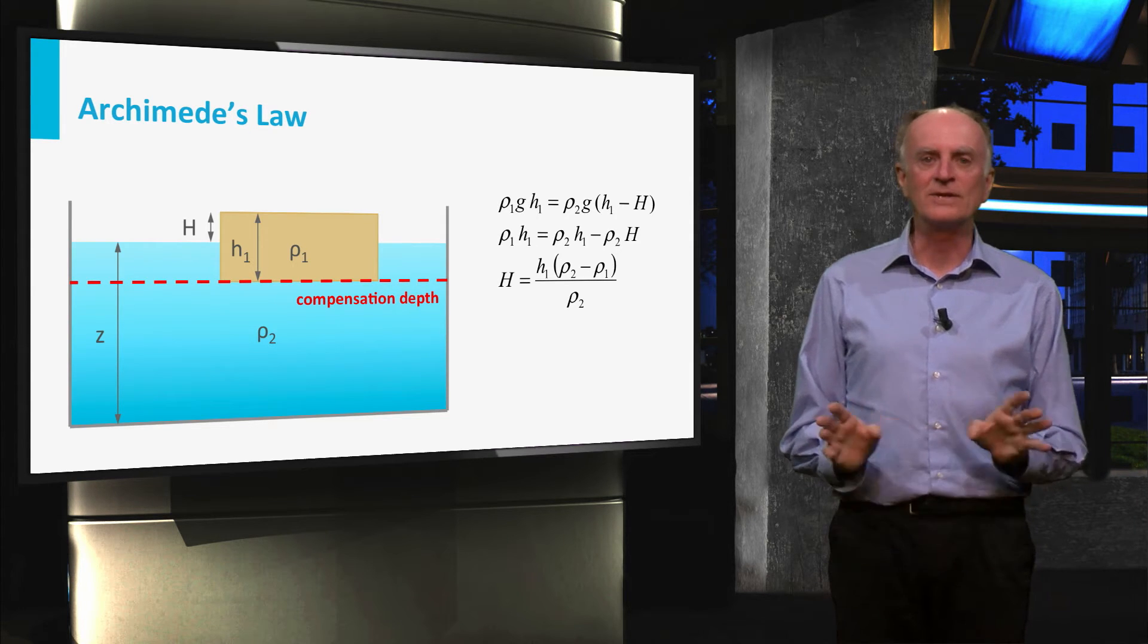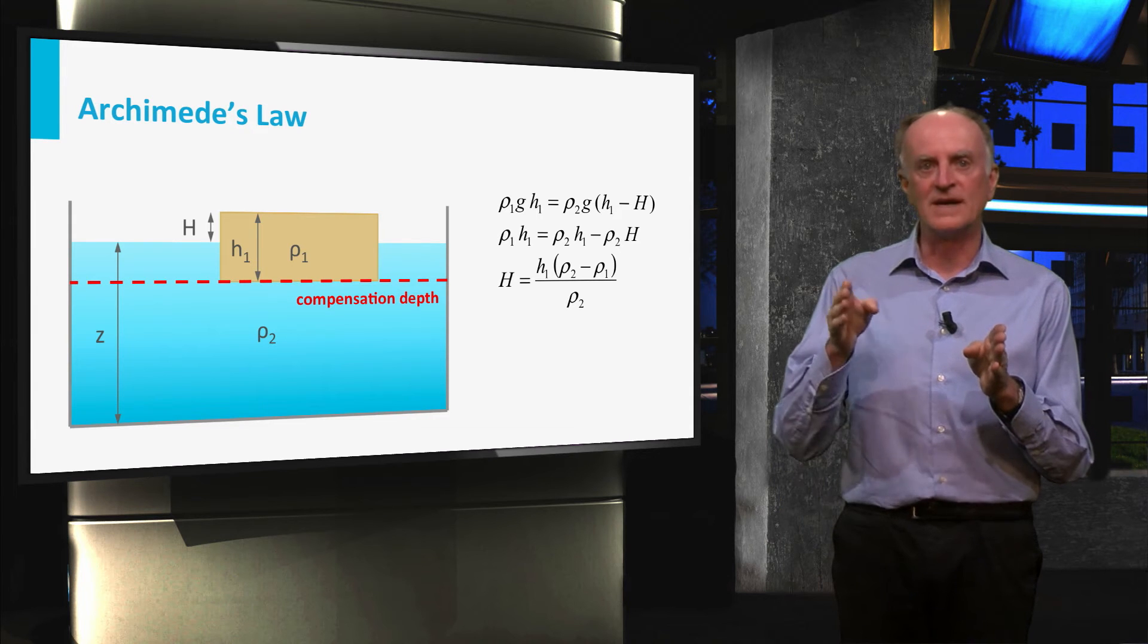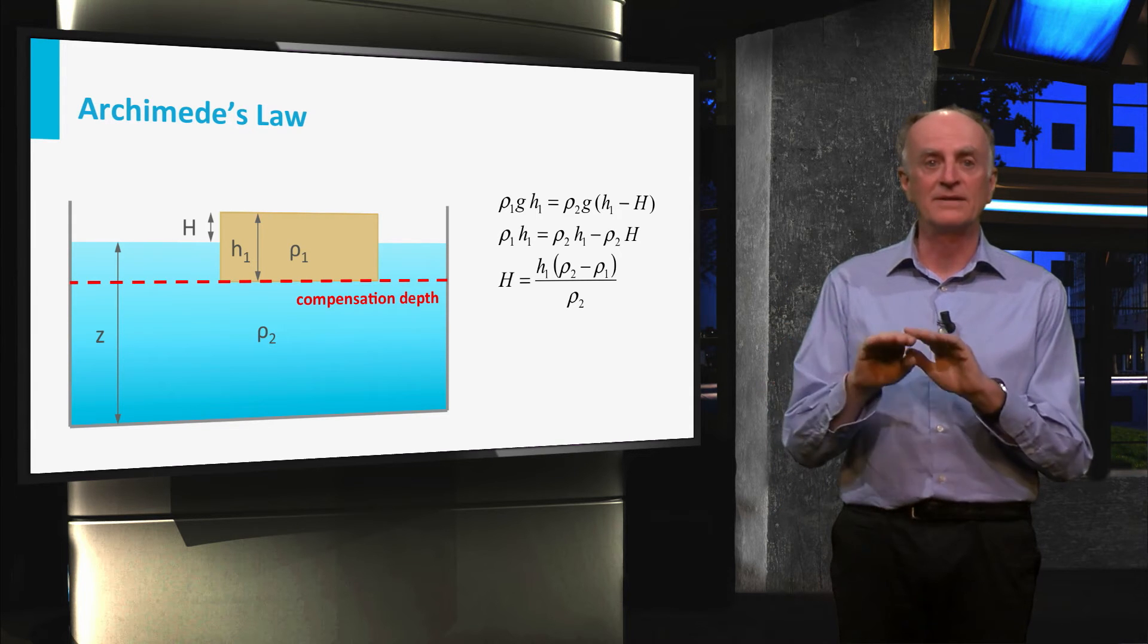An alternative formulation of the law of isostasy is that if isostatic equilibrium exists, then the weight of all columns above the compensation depth are the same.